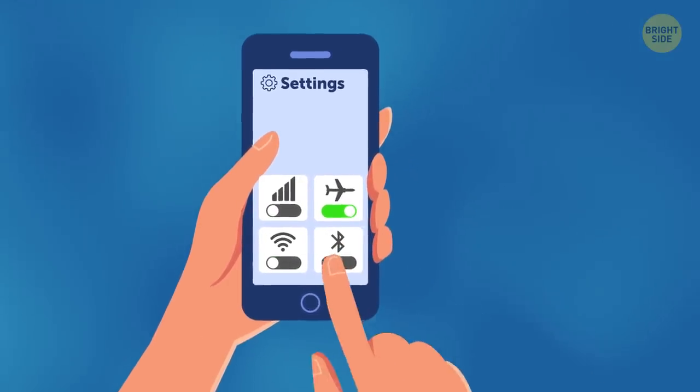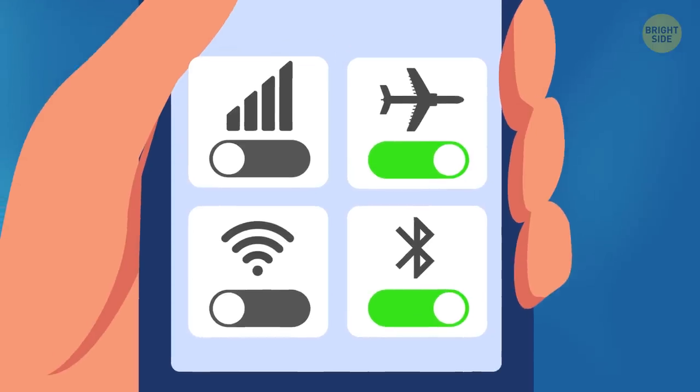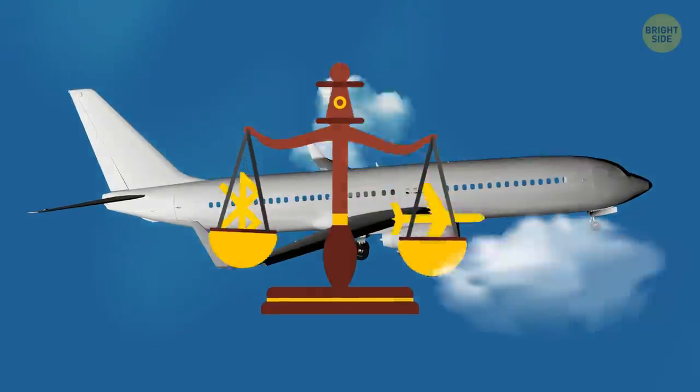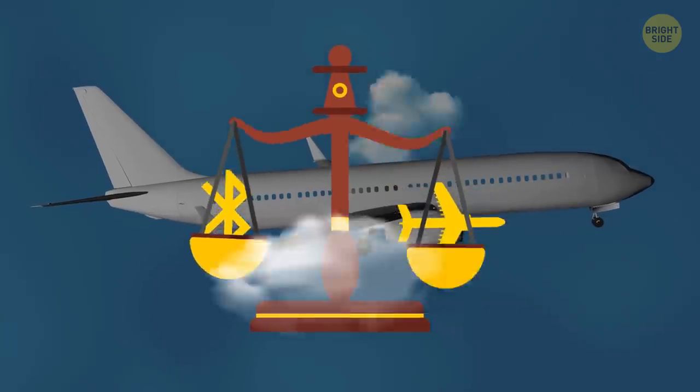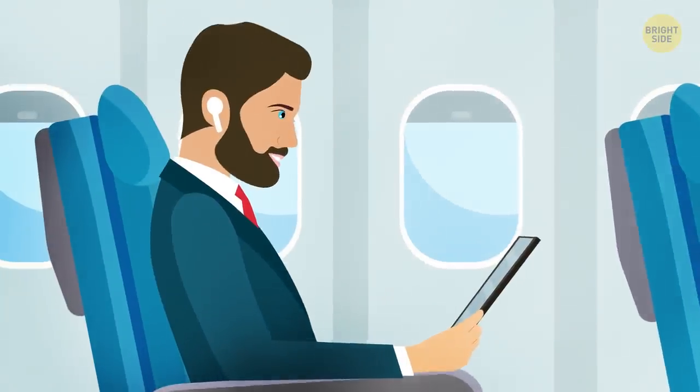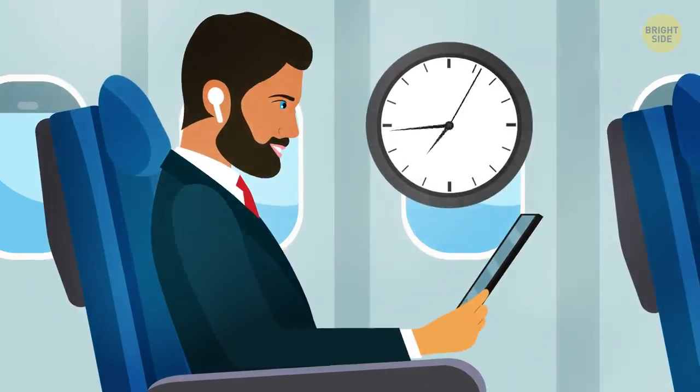Then you re-enable Bluetooth by choosing On in your Bluetooth settings. What do you know? You aren't breaking any regulations by ignoring the airplane mode rule. And at the same time, you can listen to your favorite songs or watch movies to pass the hours.